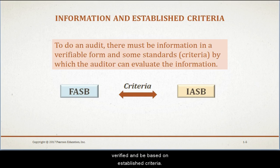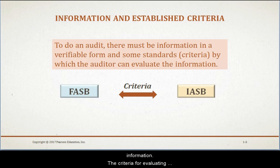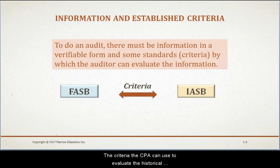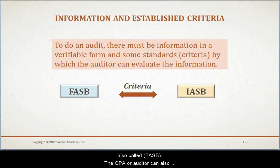To do an audit, information used by the auditor must be verified and must be based on an established criteria. Criteria could be a standard in which to evaluate audit information. The criteria for evaluating information will vary depending on the information being audited. For example, a CPA firm engaged by a company that sells widgets, asked to audit its historical financial statements — the criteria the CPA can use will be based on the standards established by the Financial Accounting Standards Board.